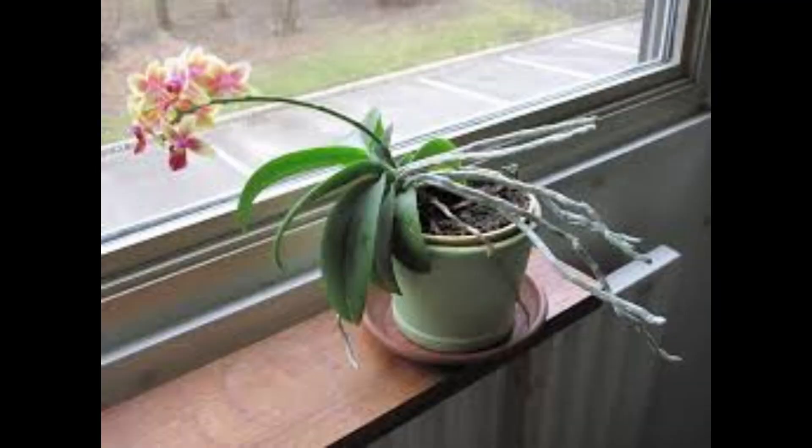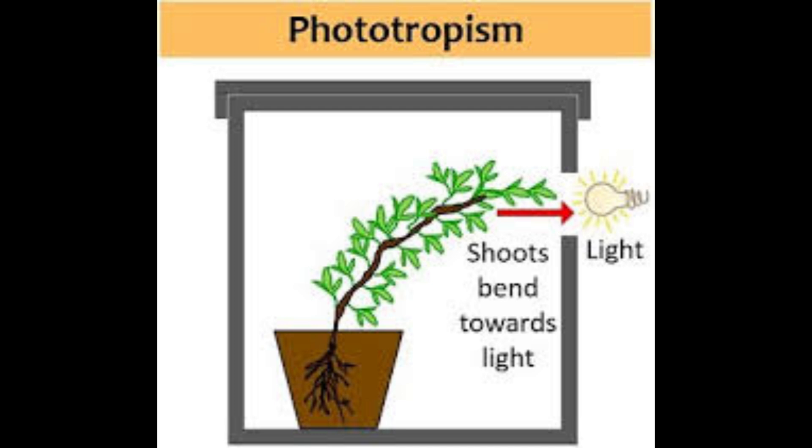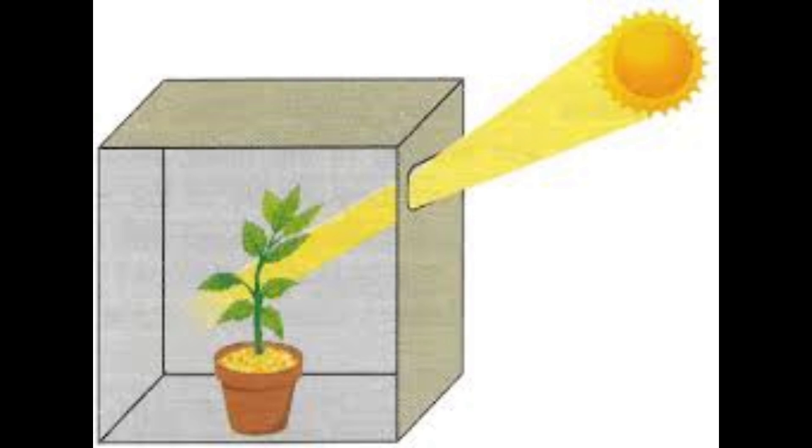Types of tropic movements. Phototropism: movement towards light. Example — the bending of a shoot towards sunlight.